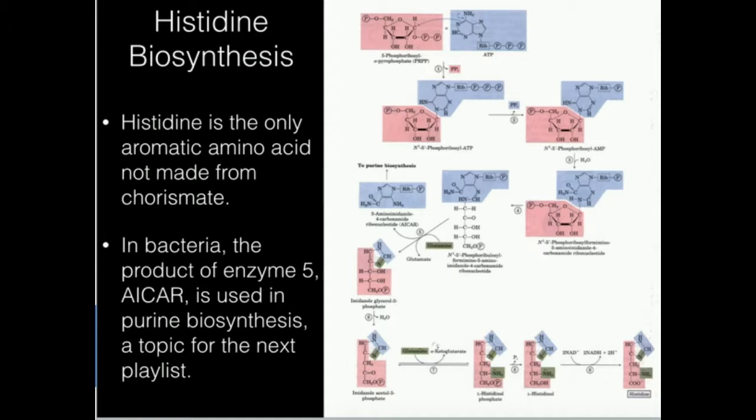But then here's a really important step from the bacteria's perspective. This step five is called glutamine amidotransferase. Suffice it to say what it does is it kicks off this molecule, which is called aminoimidazole carboxamide ribonucleotide. Usually we abbreviate that and say it's AICAR. You can see this A-I-C-A-R, AICAR.